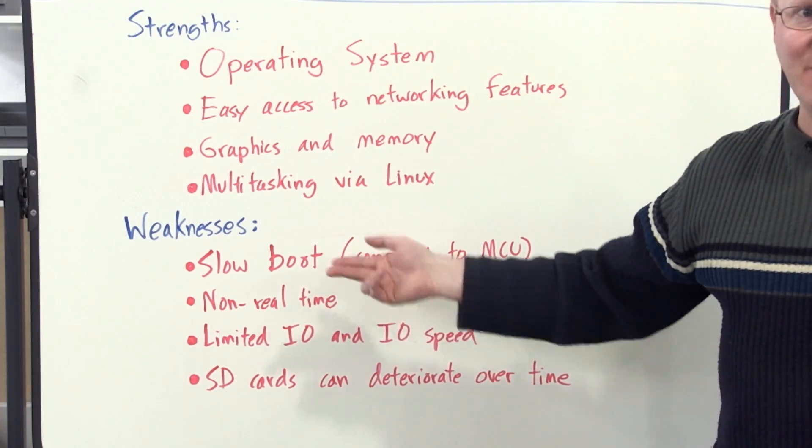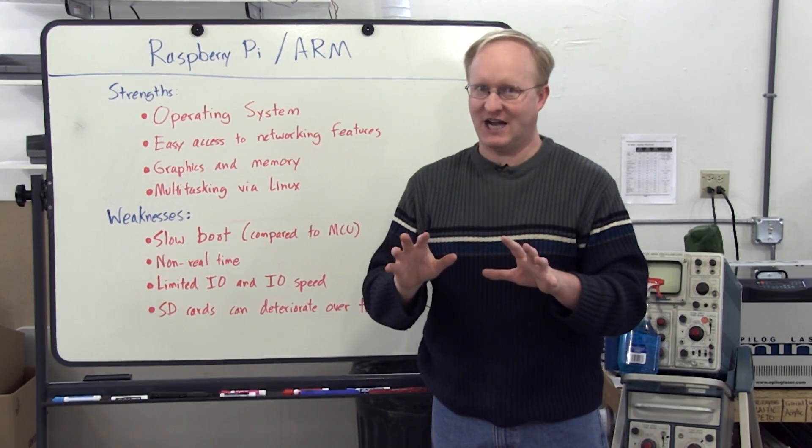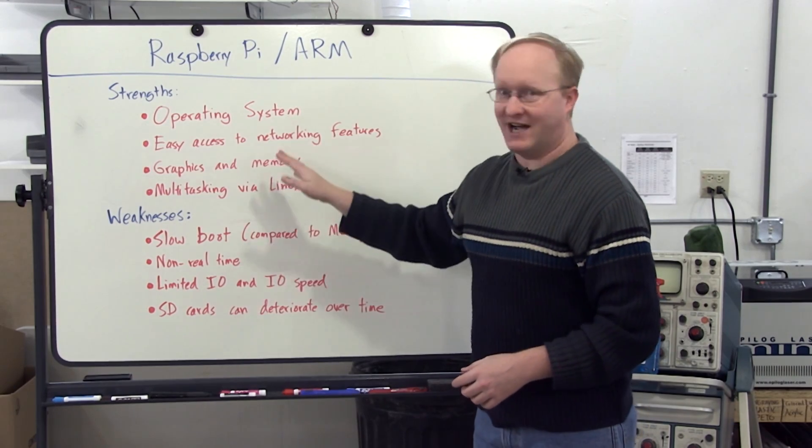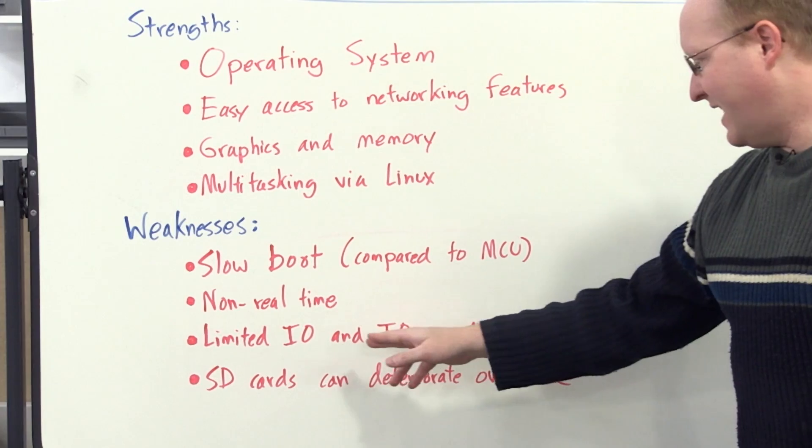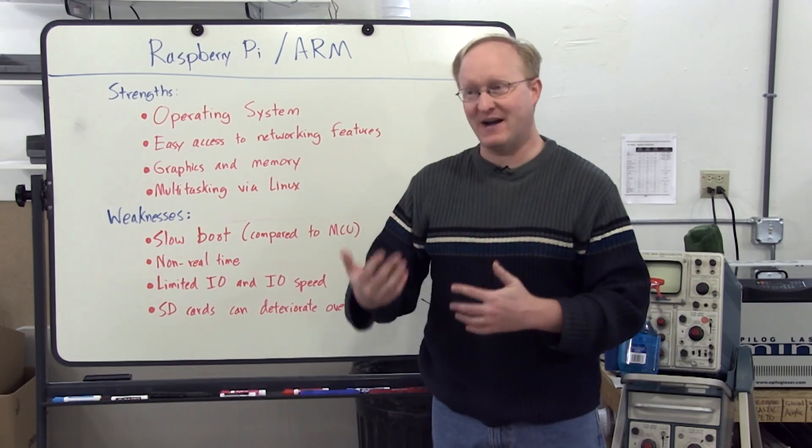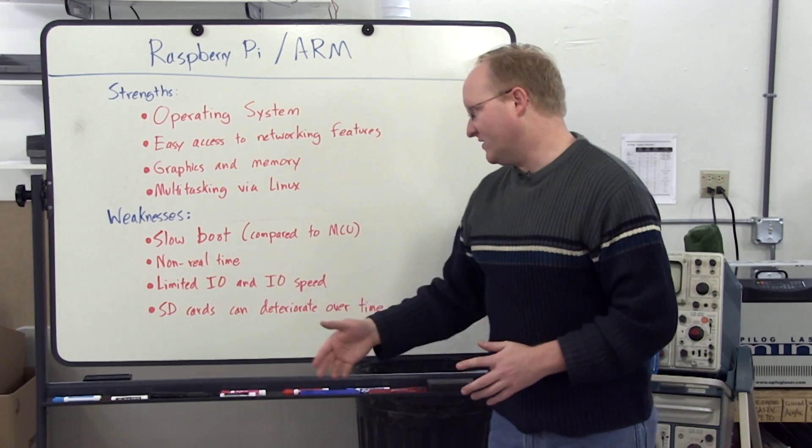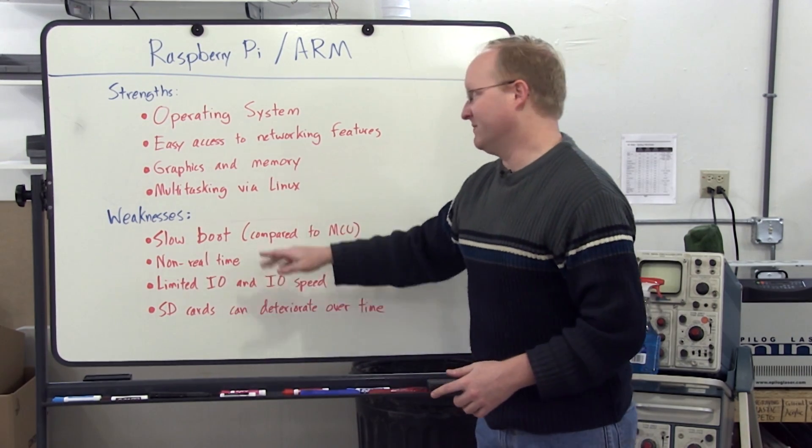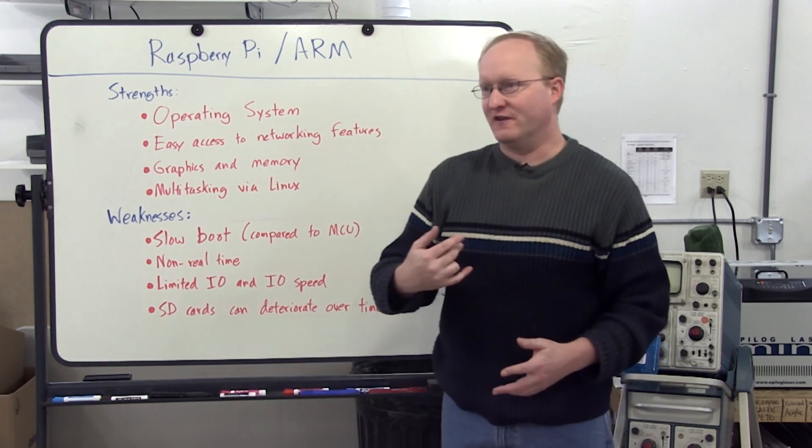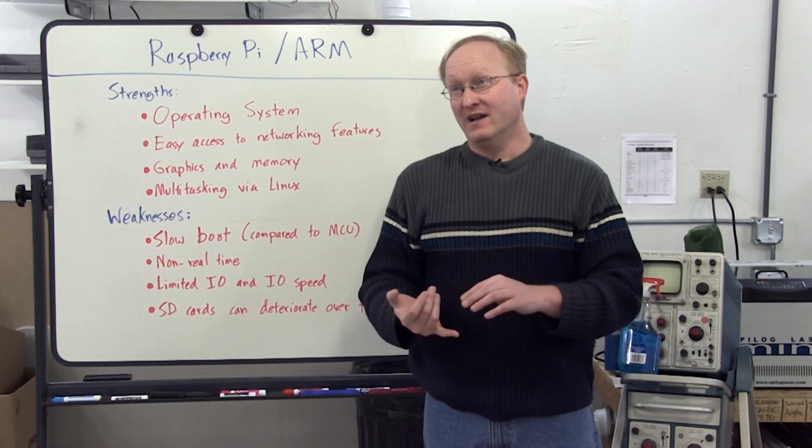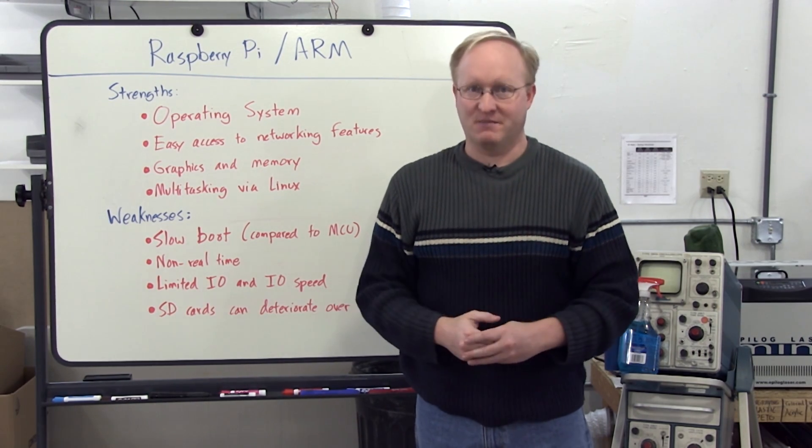It's non-real-time. You've got an operating system, but you don't know exactly when things are executing. You can get a real-time operating system, but Raspberry Pi stock with a non-real-time operating system. You also have limited I/O and I/O speed. The newer Raspberry Pis have more I/O, but still, it's not as much as some larger microcontrollers. And also, with being a non-real-time system and multiple threads going on, you don't know exactly how fast your I/O is going to be. So for timing-critical things like PWM or servos, it's not going to work as well or be as easy to use as a microcontroller.